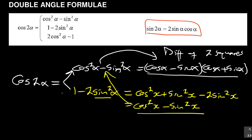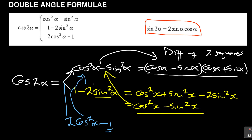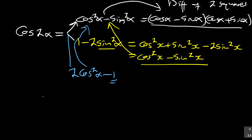The last form is 2 cos²α minus 1. On this one it's similar — you can make this cos²x + sin²x and it will lead you back to that first form as well. So always remember there are three forms of cos 2α.